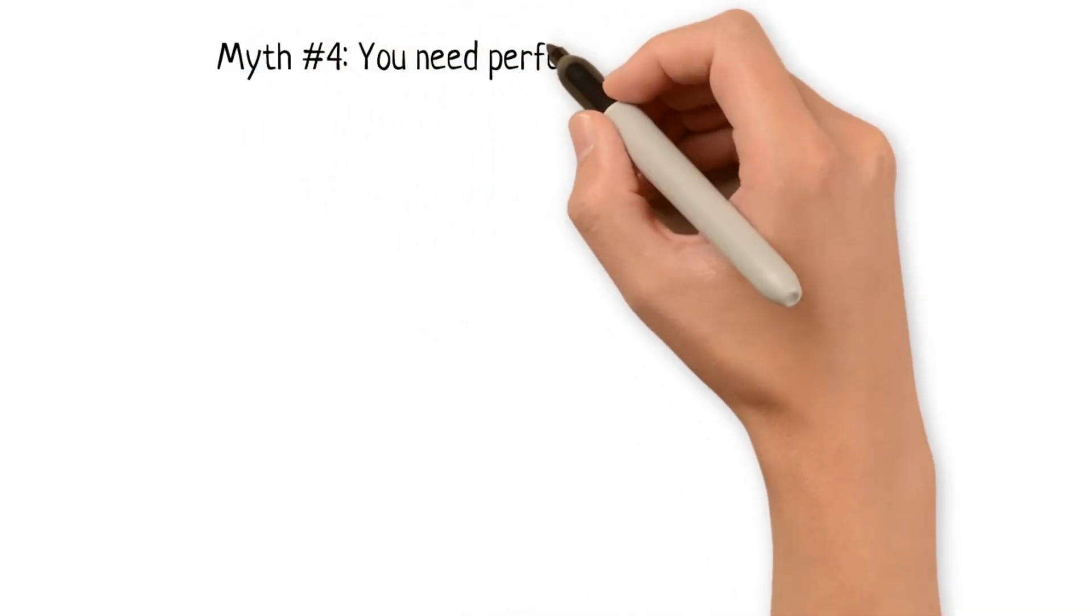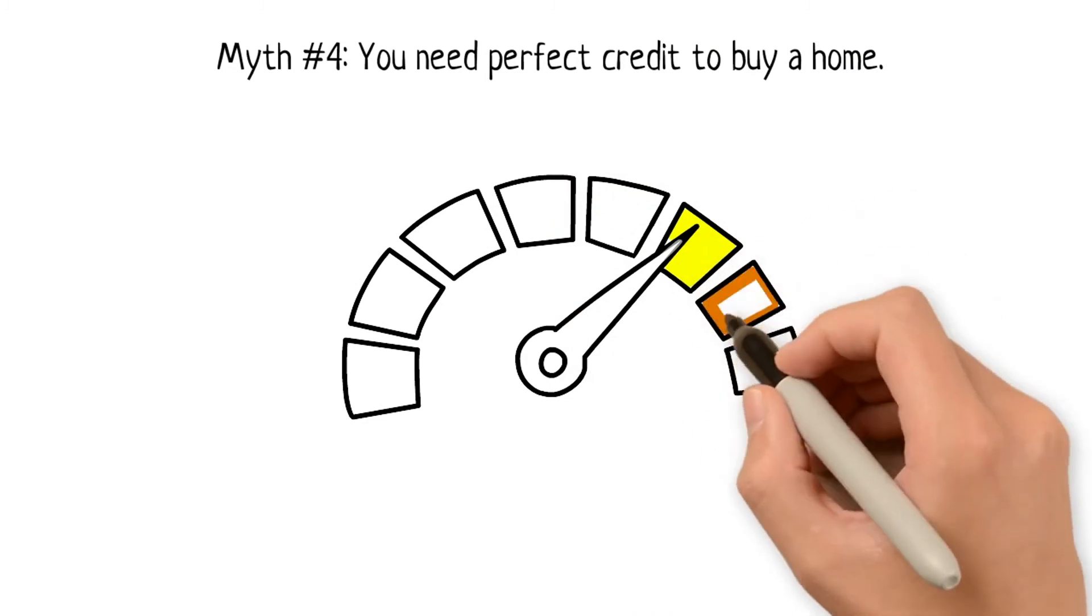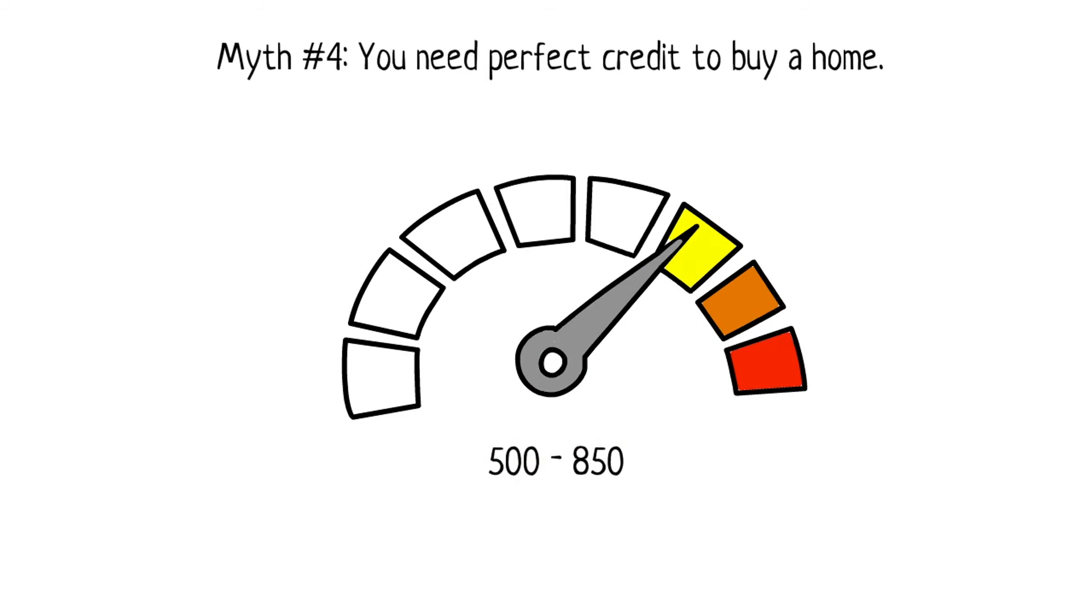Myth #4: You need perfect credit to buy a home. While a perfect credit score would be ideal, keep in mind that acceptable credit scores range from 500 to 850, with the majority falling between 600 to 700. Lenders consider many factors before they approve a loan.